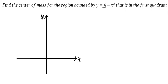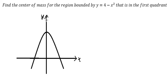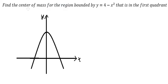So the function f of x equals 4 minus x squared. The question asks us to find the center of mass in the first quadrant. The area we need to concentrate on is this region here, and now we need to find the intersection.